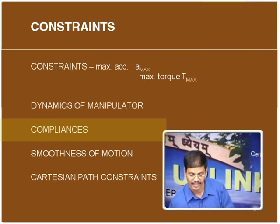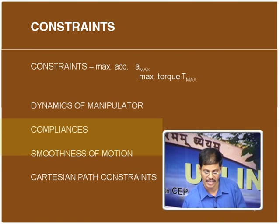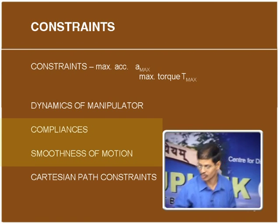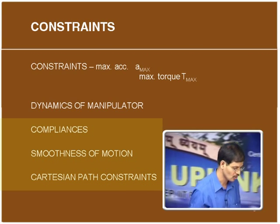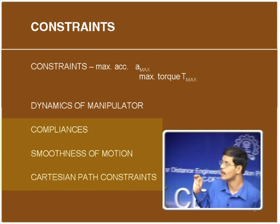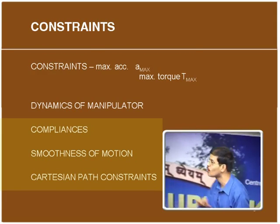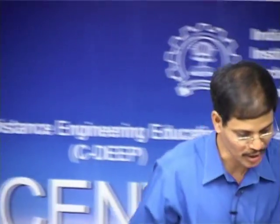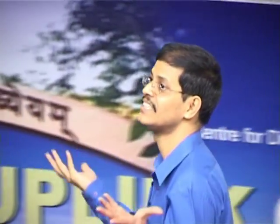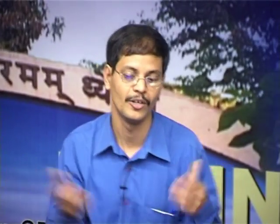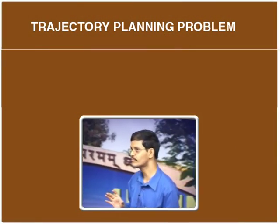Other dynamic effects include joint and link compliances — finite stiffnesses. When you move from one position to another with some finite velocity and acceleration, inertia forces are set up, and as it reaches the target it may vibrate and then settle down. Because of these inherent stiffnesses, the robot could start welding in a zigzag manner when asked to follow a particular path. These constraints — dynamics and compliance — have to be taken into account, along with smoothness of motion.